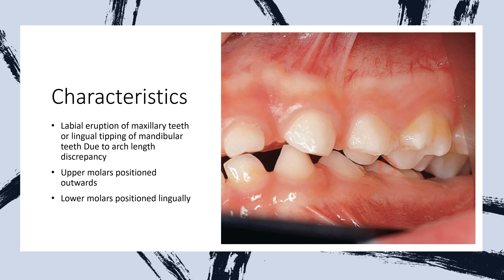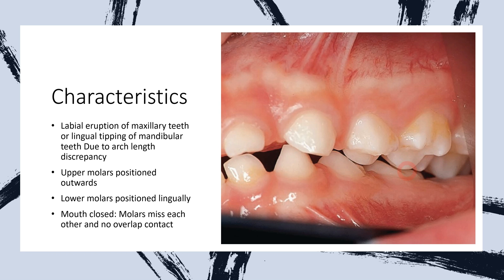The lower molar is present lingually, and when the patient closes their mouth, you can see that the maxillary molar is present buccally and the mandibular molar is present lingually. Therefore, there is no overlap. Normally, the palatal cusp should occlude in the lower molar central fossa — that is the normal relation. But in cases of scissor bite, there is no overlap; the maxillary molar is present buccally and the lower molar is present lingually.